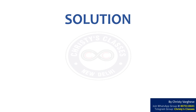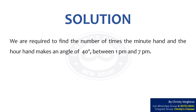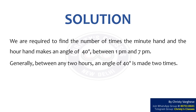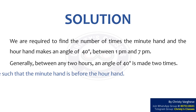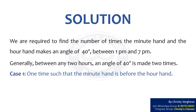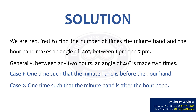Solution. We are required to find the number of times the minute hand and the hour hand make an angle of 40 degrees between 1 pm and 7 pm. Generally, between any 2 hours, an angle of 40 degrees is made 2 times — Case 1 where the minute hand is before the hour hand, and Case 2 where the minute hand is after the hour hand.